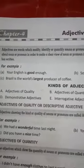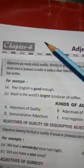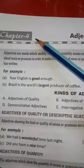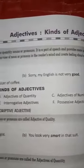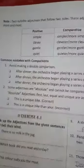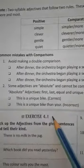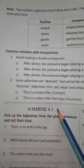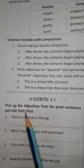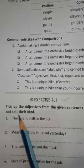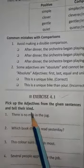Wishing a better time ahead, I welcome all of you to your online English class. Today we are going to go through chapter number four — adjectives, kinds of adjectives — and we are going to start our exercises given in Bravia Fundamental Grammar and Composition. We are doing exercise number 4.1. Pick up the adjective from the given sentences and tell their kind.